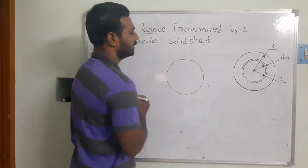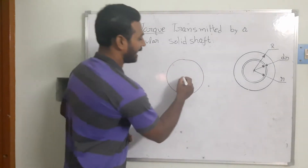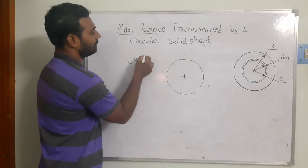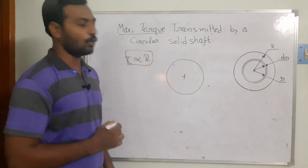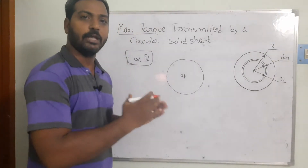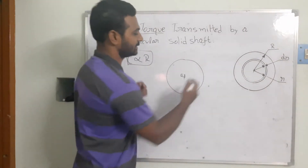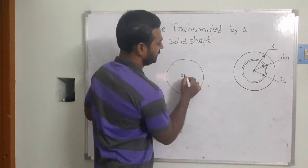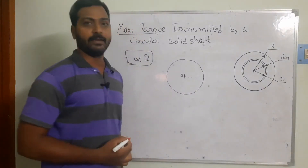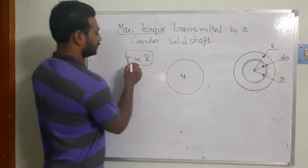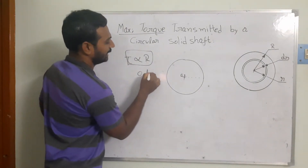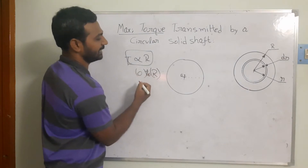As we saw in the last class, this is the shaft. The shear stress is directly proportional to the radius of the shaft. Starting from the center O and moving outward to the outside layer of the circle, we get radii r1, r2, r3, r4, and so on.